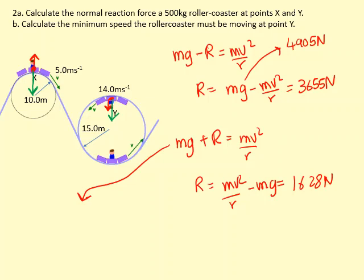If he's going too slowly, he'll lose contact with the track. At that point, R becomes 0. So we can ignore R. So you get Mg equals Mv squared over R.